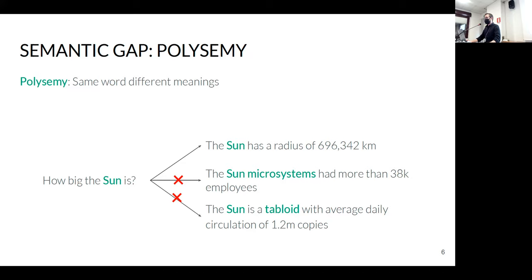The second problem related to the semantic gap is polysemy — when the same word has several different meanings. Taking again the query 'how big the sun is,' there are three valid answers in general, but only one is correct according to our information need: the first one describing the dimension of our star. The other two are true if we have a broader concept of 'sun' in mind, but they introduce a distortion in results responsible for low precision.